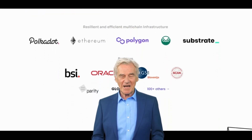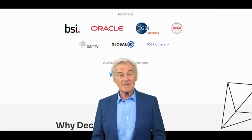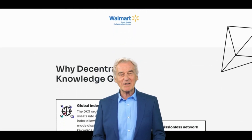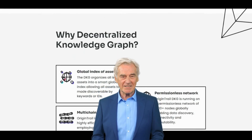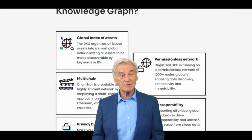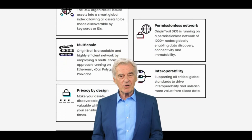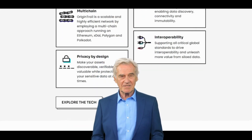OriginTrail aims to address the problem of fragmented and siloed supply chain data by creating a decentralized network where data can be shared securely and transparently. The platform enables companies to verify the authenticity and quality of their products, track their movements throughout the supply chain, and ensure compliance with regulations and standards.